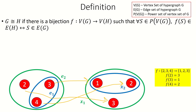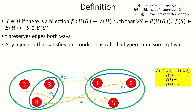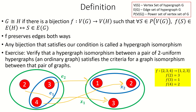This means that F is a mapping of vertices that preserves edges both ways. Any bijection that satisfies this condition is referred to as a hypergraph isomorphism between G and H. I encourage you to verify that when restricted to graphs, or two-uniform hypergraphs, our definition of hypergraph isomorphism agrees with that for graph isomorphism.